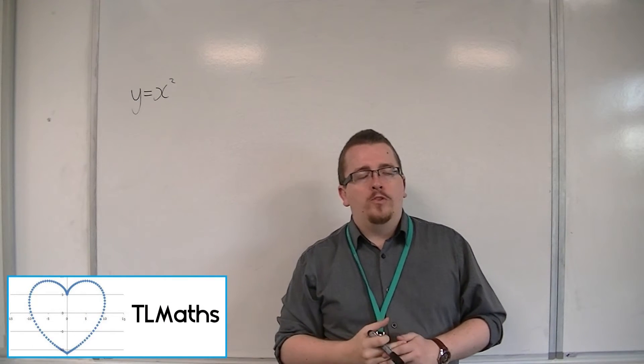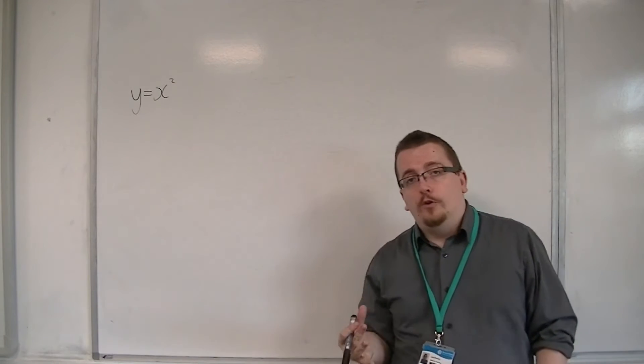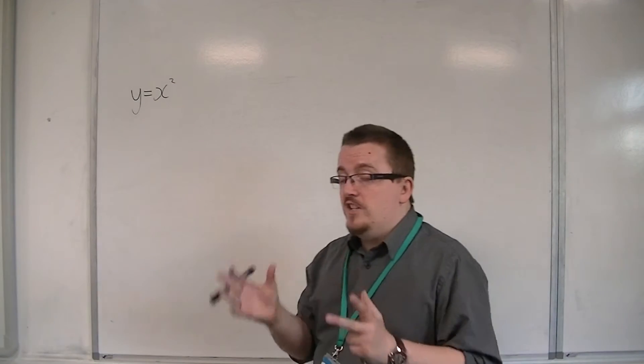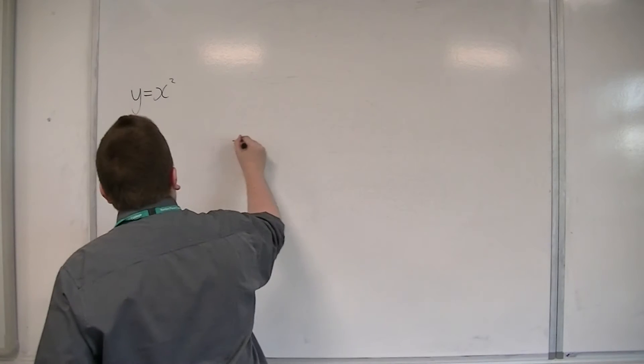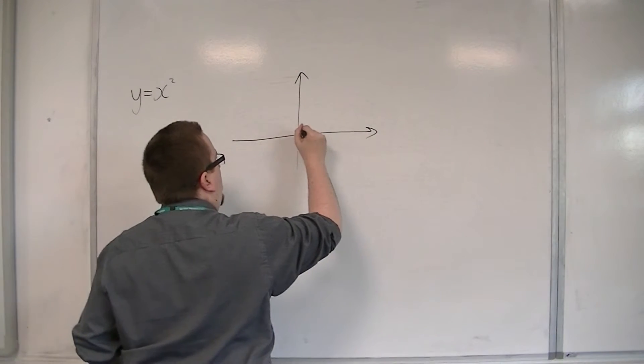In order to sketch quadratics, we need to know what y equals x squared looks like first, before we can do anything else. So, y equals x squared looks like this.